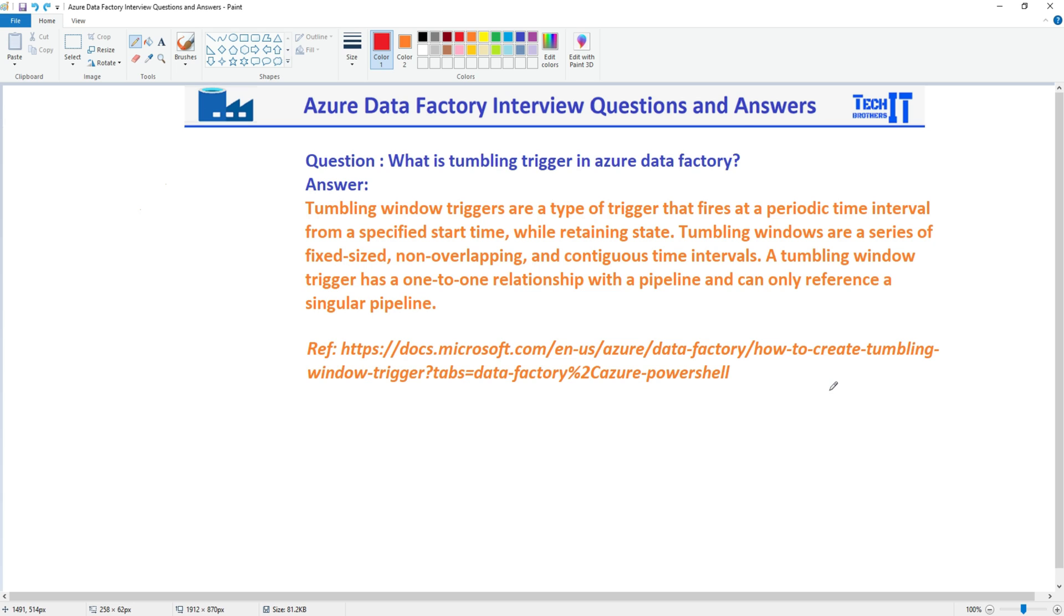And then other scenarios they can give you like: we have a stored procedure that needs to run from last one year for each of the day. And then once all the data is loaded, the next day it should start from the last date where you ran the pipeline and then move forward each day. So these all scenarios will be covered with the Tumbling Trigger because